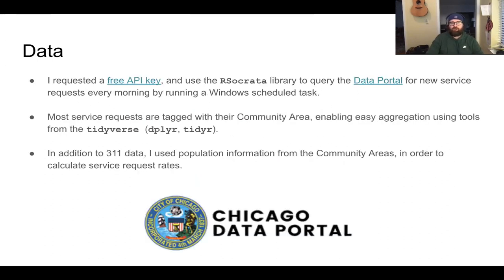To get my data, I requested a free API key and used the R Socrata library to query the data portal for new service requests every morning by running a Windows scheduled task on my desktop at home. Most service requests are tagged with their community area, enabling easy aggregation using tools from the Tidyverse, like dplyr and tidyr.